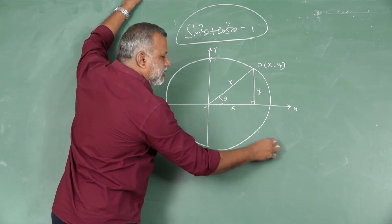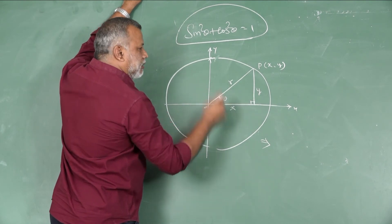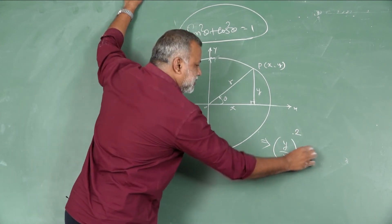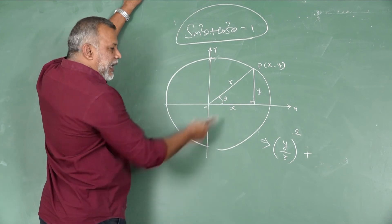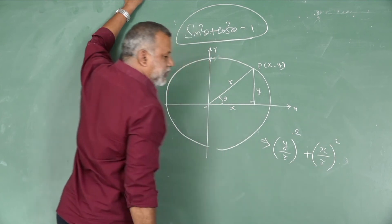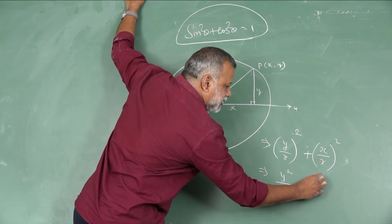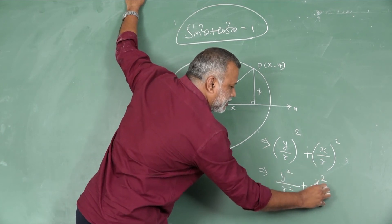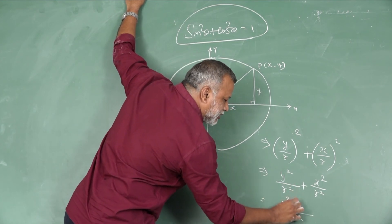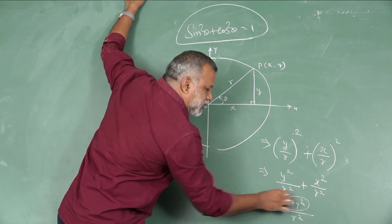What is the meaning of sin θ? Basically sin θ = y/R, so sin²θ = (y/R)². And cos θ = x/R, so cos²θ = (x/R)². Therefore, sin²θ + cos²θ = y²/R² + x²/R² = (x² + y²)/R².